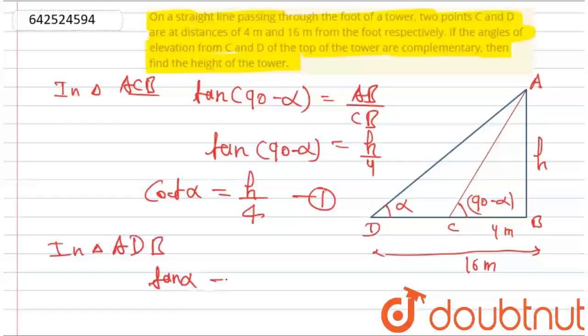We'll take tan alpha, which will be equal to AB, which is h, and the base, which is BD. That is 16 meters. Let's say this is equation number two.